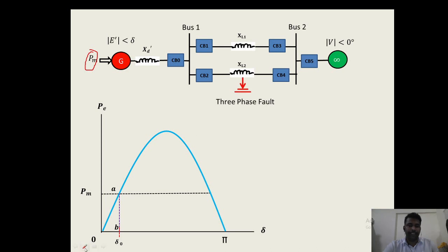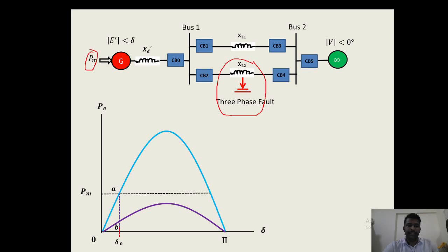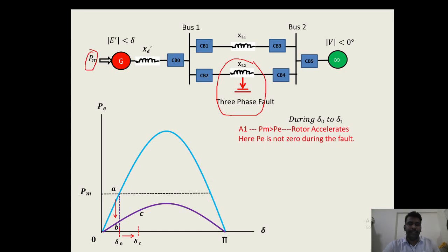When a three-phase fault occurs in one of the transmission lines, the power flow will be reduced and the point of operation will shift from A to B, and the power angle curve will be given by the second curve. At point B, mechanical power is greater than electrical power, so the rotor will start accelerating and the power angle will increase from delta_0 to delta_C, where the fault is cleared or circuit breakers operate.